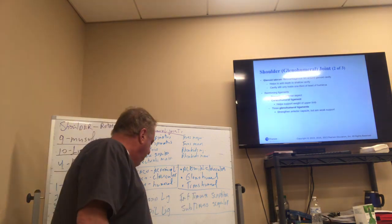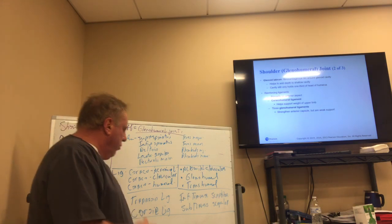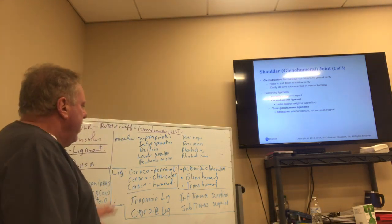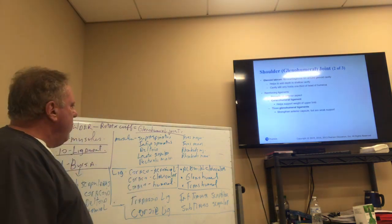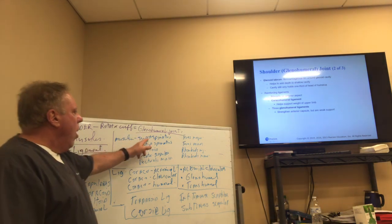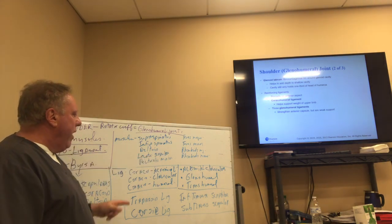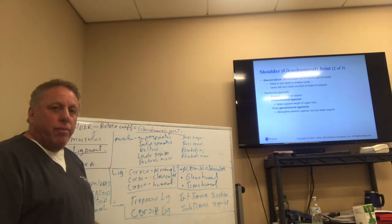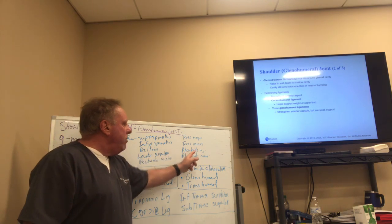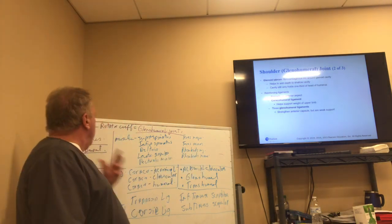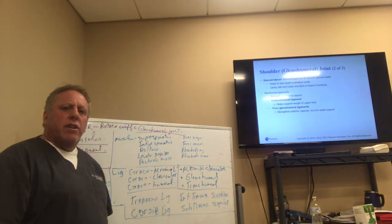Please understand what we're doing here. This is a system of understanding it. So you have 10 ligaments and nine muscles. The muscles involved in the shoulder are the supraspinatus, the infraspinatus, the deltoid, the levator scapulae, the pectoralis minor, teres major, teres minor, the rhomboids major, and the rhomboids minor. So you have nine muscles that are stabilizing this shoulder.